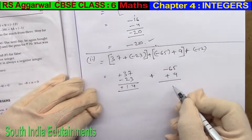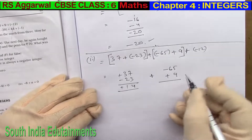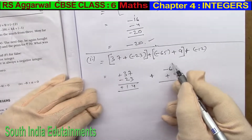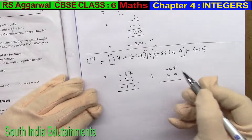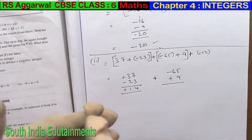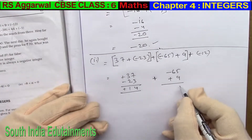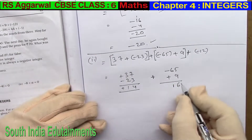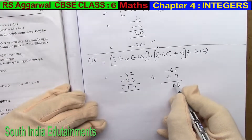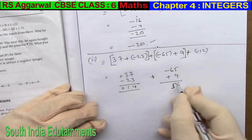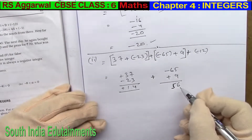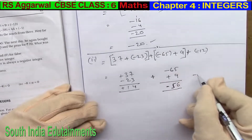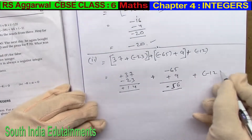Minus 65 plus 9 — two variables. Count: 9, 10, 11, 12, 13, 14, 15. So, it's 6, 1, 5. So, 56. It's minus 56. So plus, this bracket is minus 12. Okay, so this part is minus 12.